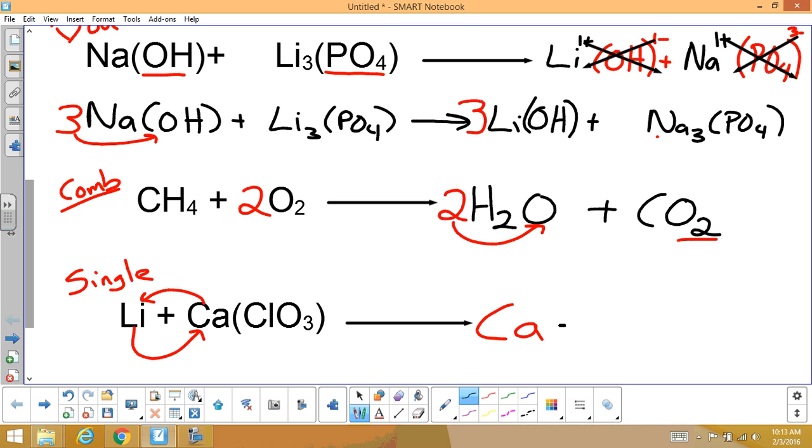But then, we have lithium coming together with chlorate. That's LiClO3. So, we put the charges up top. Since Ca is chilling by itself, it doesn't have a charge. Lithium is plus one. Chlorate is minus one. So, looking at this, Li is one, Li is one. It's just going to be LiClO3. Calcium is one, calcium is one. Chlorate is one, chlorate is one. So, it is already balanced for the single replacement.